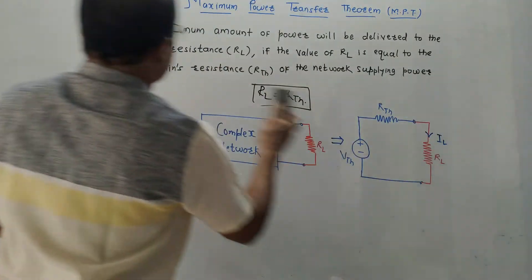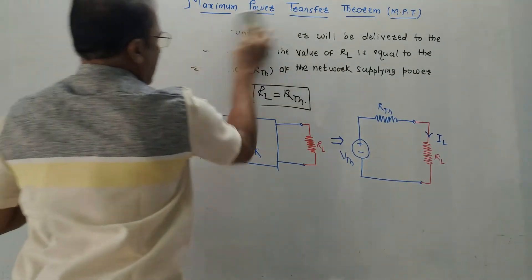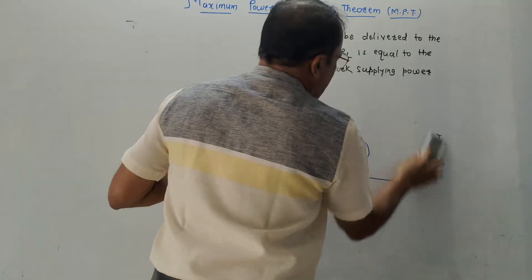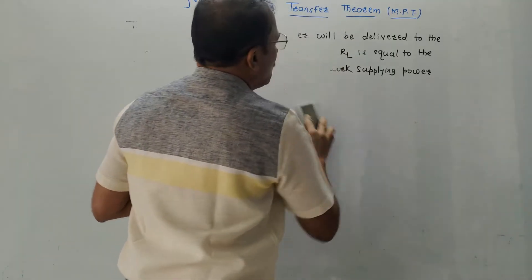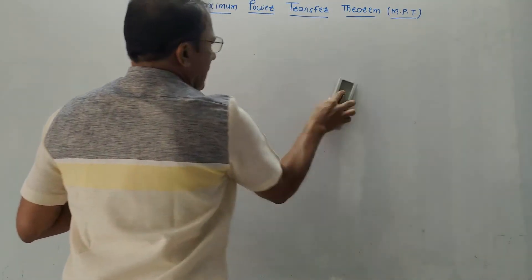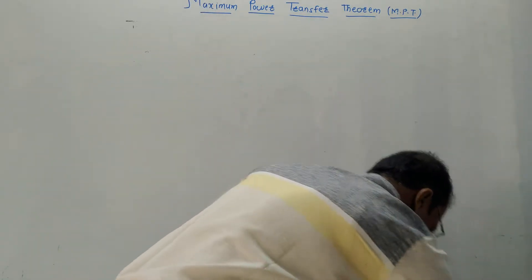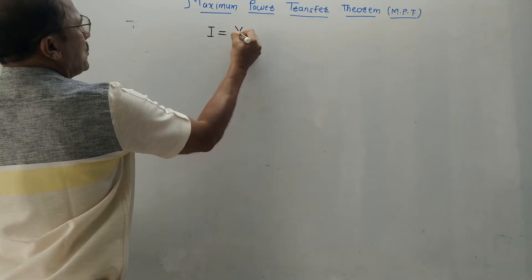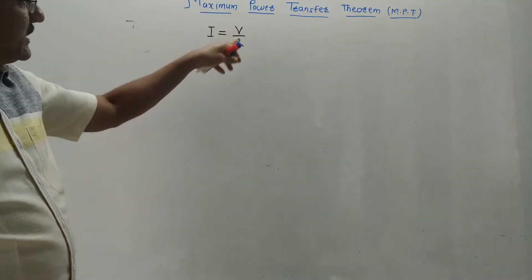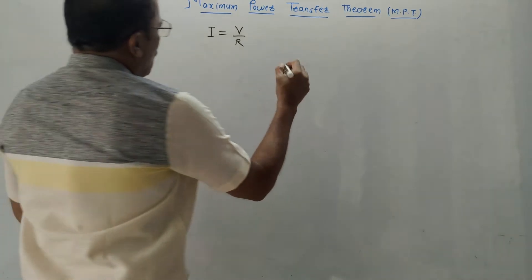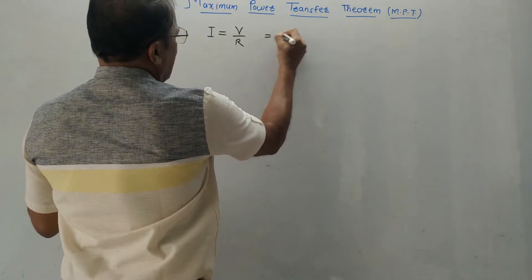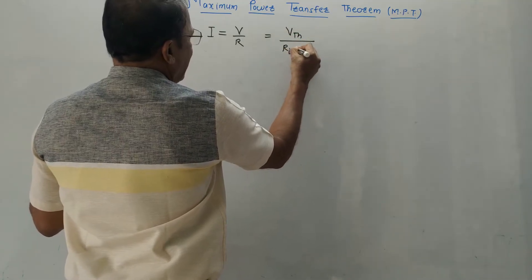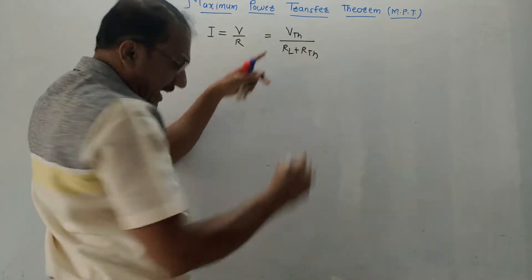Let us discuss the explanation of this theorem. The explanation is pretty simple — we have only one condition: the load resistance must be equal to the Thevenin's equivalent resistance of the network supplying power. We know the well-known formula from Ohm's law: I equals V by R. In this case, we write I equals VTH upon RL plus RTH.